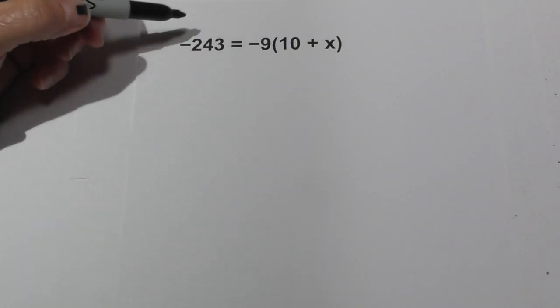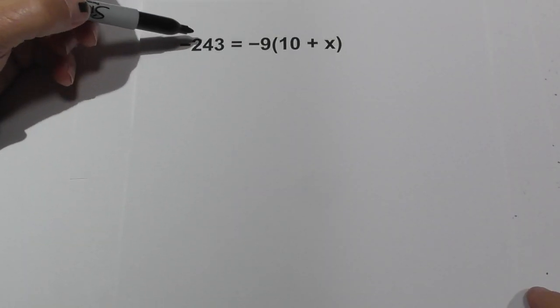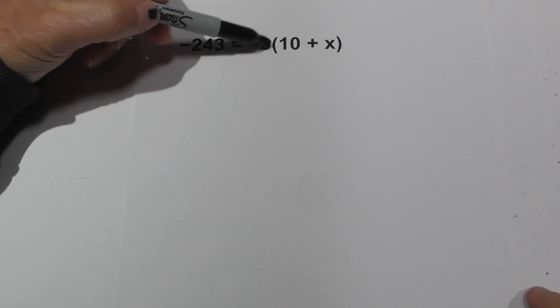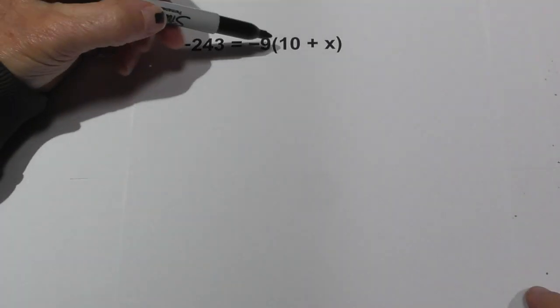Welcome to Moo Moo Math and Science. In this video let's solve negative 243 equals negative 9 in parenthesis 10 plus x. So let's get started.